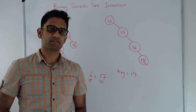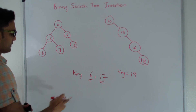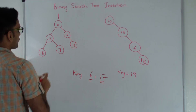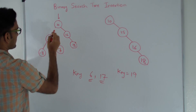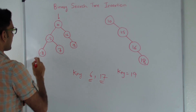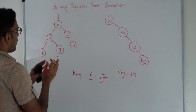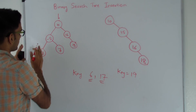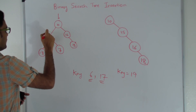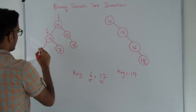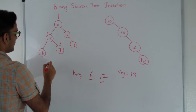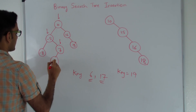Let's see how we insert into this binary search tree. Let's try inserting key 6. We come to the root and check if 6 is less than or greater than 10. Since 6 is less than 10, we go left. We come to minus 5 — 6 is greater than minus 5 so we go right. Then at 7, 6 is less than 7 so we go left and insert 6 right there.